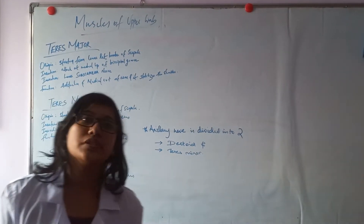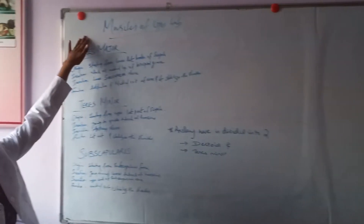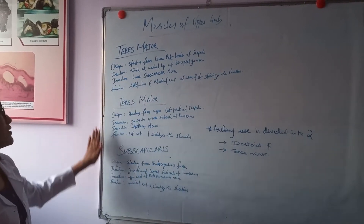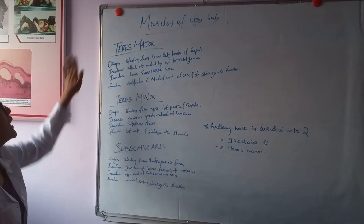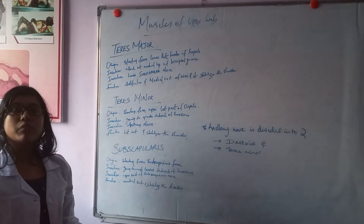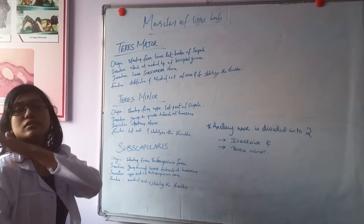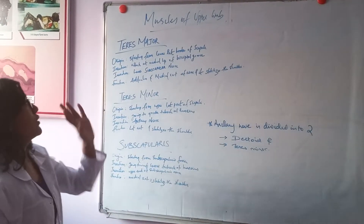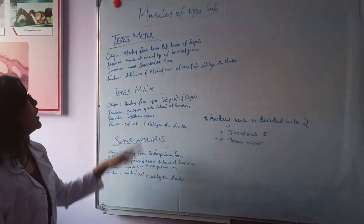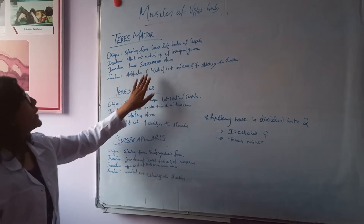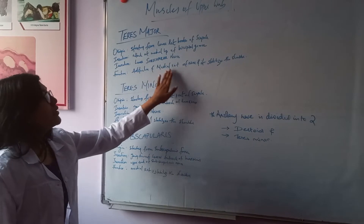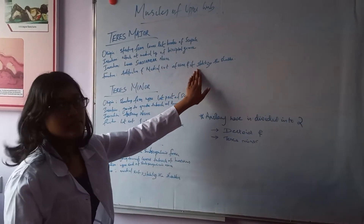Today we will continue with three more muscles: teres major, teres minor, and subscapularis. The teres major originates from the lower lateral border of the scapula, and inserts at the medial lip of the bicipital groove. Its innervation is the lower subscapular nerve. Its function is adduction and medial rotation of the arm, and it stabilizes the shoulder.